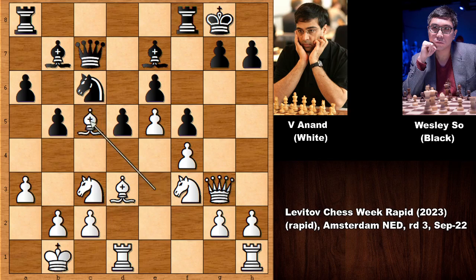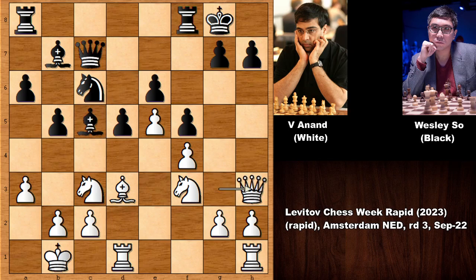Bishop takes knight, capturing the knight, bishop takes on c5, queen to h3, and the knight can jump to g5. In this position, after pushing the pawn, simply g4. This was the idea of Viswanathan — clearing the path and charging forward.